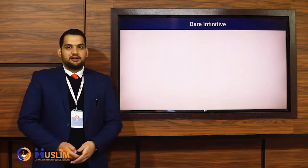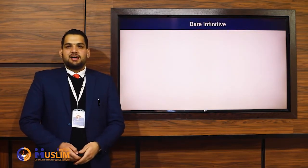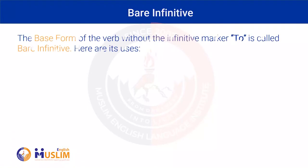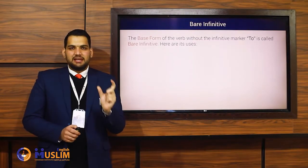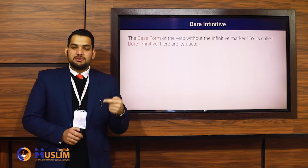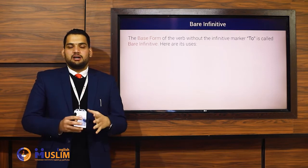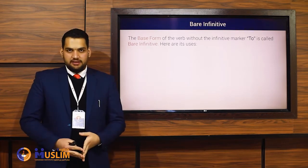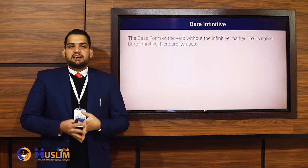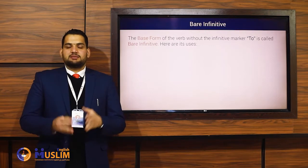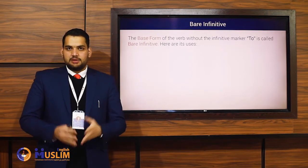First of all, let's talk about bare infinitive. A bare infinitive is also known as incomplete infinitive. The base form of the verb without the infinitive marker 'to' is called bare infinitive. Whenever we use only the base form of the verb without 'to' — 'to' is known as an infinitive marker in this context — that sort of infinitive is known as bare or incomplete infinitive. Remember, we cannot say that every base form of the verb is bare infinitive. There are some specific uses of bare infinitive that you have to bear in mind.